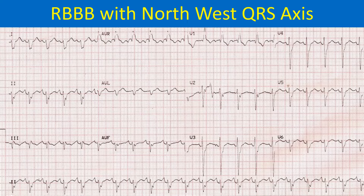The QRS pattern in chest leads shows a clockwise rotation with S waves persisting up to V6. The slurred R' in V1 and slurred S waves in lateral leads suggest delayed activation of the right ventricular myocardium, which proceeds by conduction through the myocardium rather than through the specialized conduction system of the heart.